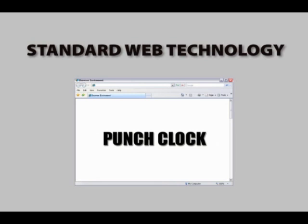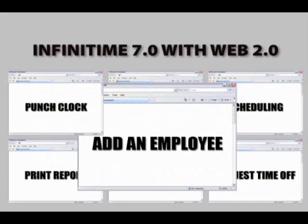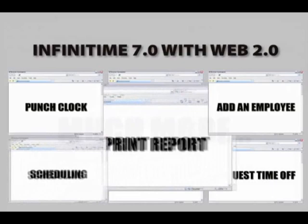Standard web technology is page-loaded, meaning it can only process one page at a time, which reduces productivity and limits your efficiency because you can only do one thing at a time. Infinitime 7.0 allows you to multitask, meaning you can do multiple tasks concurrently — edit time cards, add a new employee, print reports, and much more at the same time.